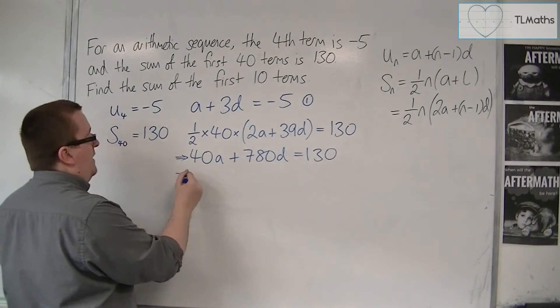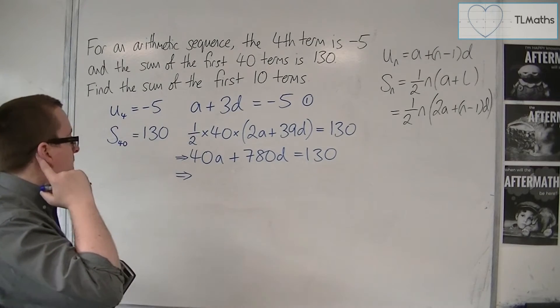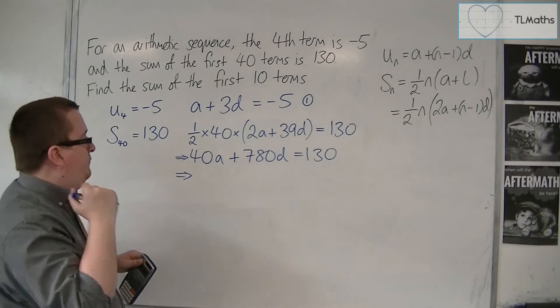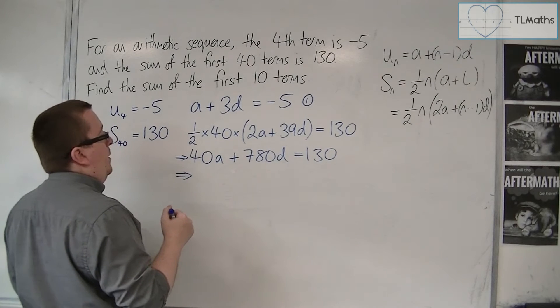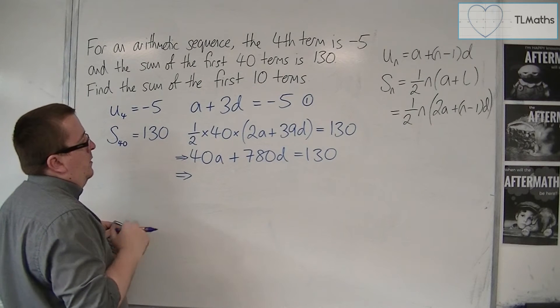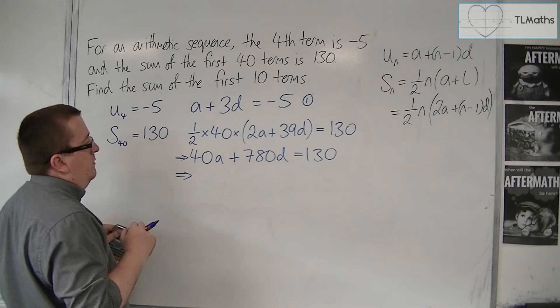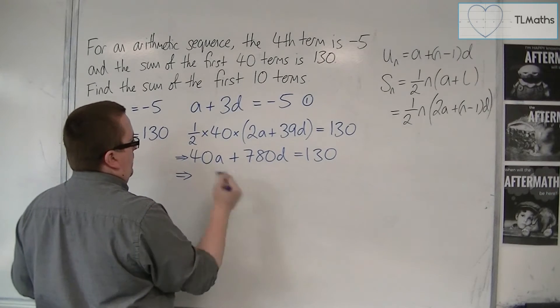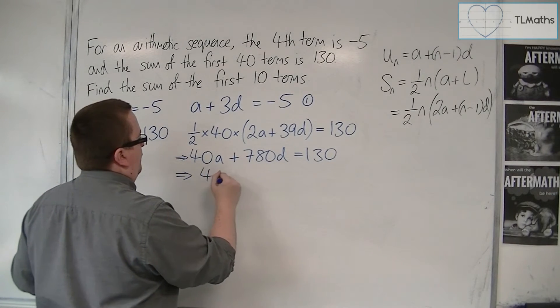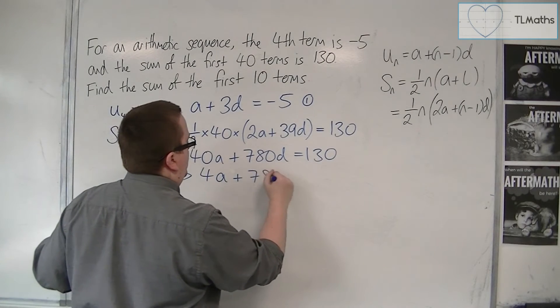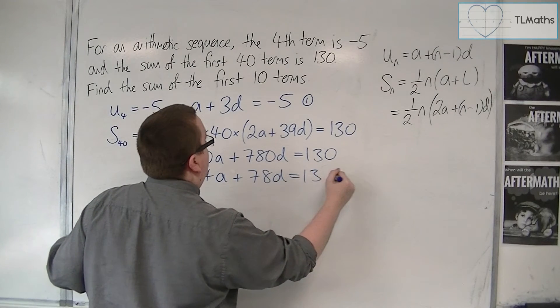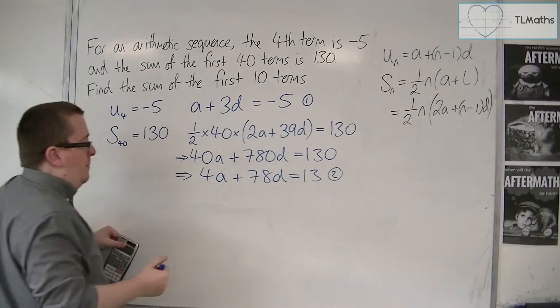Now I can simplify that a bit more. I can divide through by 10 to start off with, so we're going to get 4a plus 78d is equal to 13, and that can be equation number 2. So I now need to solve these two simultaneous equations.